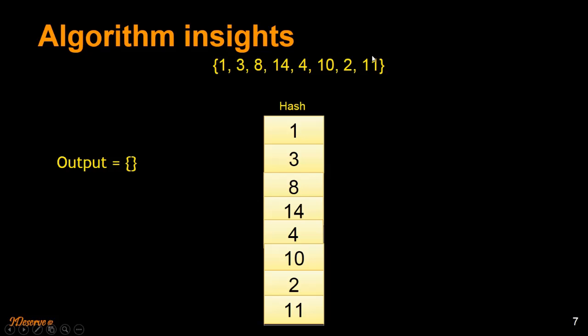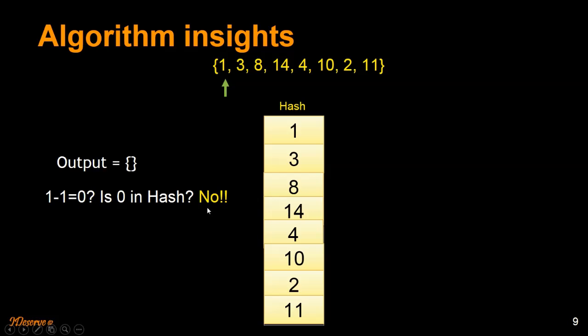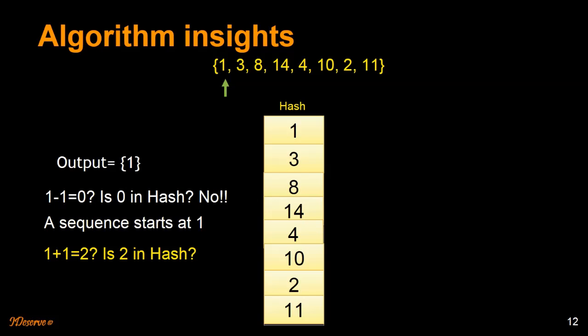Let's start with 1. We are going to see if 1 minus 1, equal to 0, is in the hash. It is not, so that means there is definitely a sequence starting at 1. We add 1 into the output subset and then start looking for the sequence. We add 1 to 1, get 2, and try to find 2 — the consecutive number from 1 — in the hash. Yes, 2 is in the hash.